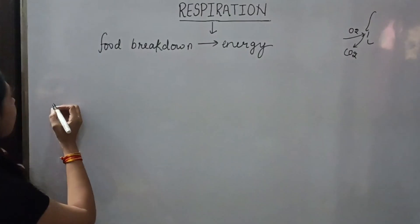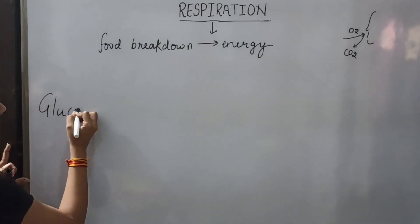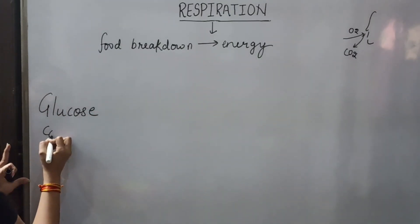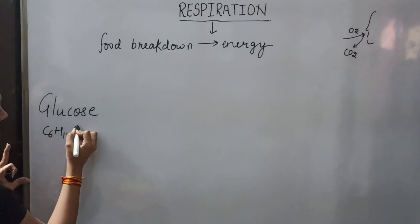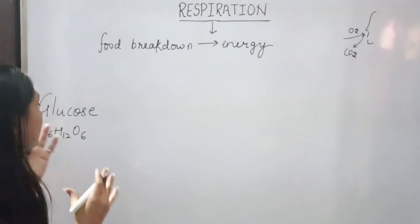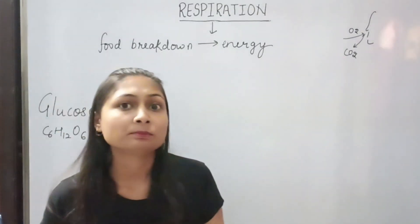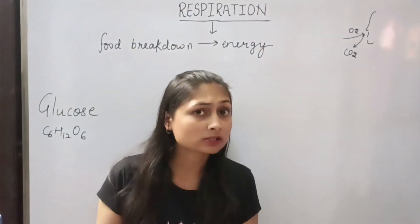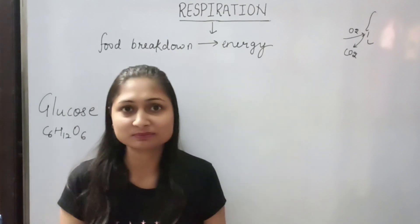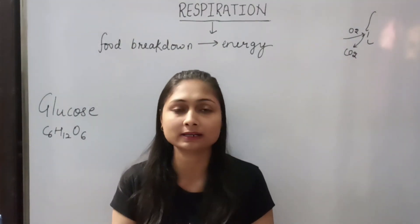Now, if we talk about food, which is glucose, its formula is C6H12O6. This breakdown of food occurs in the presence of oxygen and in the absence of oxygen. On this basis, we divide respiration into two types.